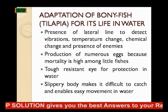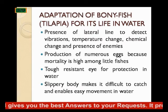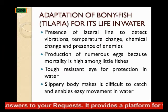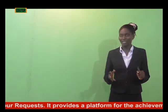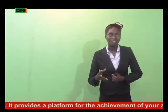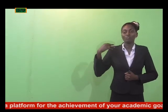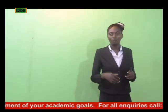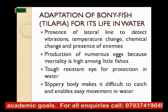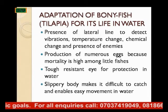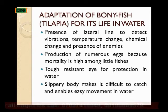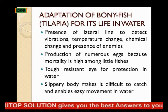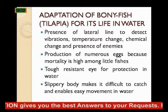The bony fish produces numerous eggs because the rate of death is high among young fish. Young fish die so much in the water, so the bony fish is adapted to produce so many eggs that even when many die, some will still survive. The bony fish has tough, resistant eyes for protection in water, and it has a slippery body that makes it difficult to be caught by enemies and also enables easy movement in water.